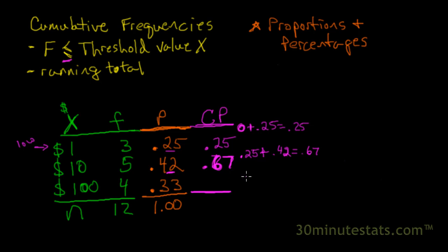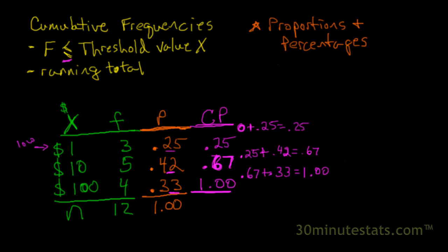For the last category of x, we start with our 0.67 and add to that the 0.33 for this value, giving us 1.00. Now we've got a running total of proportions from the lowest value of x on up to the highest.